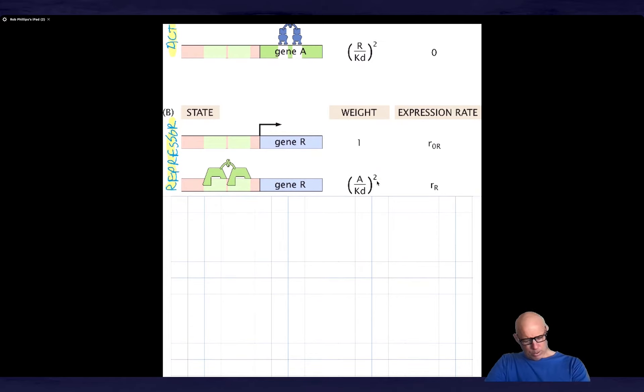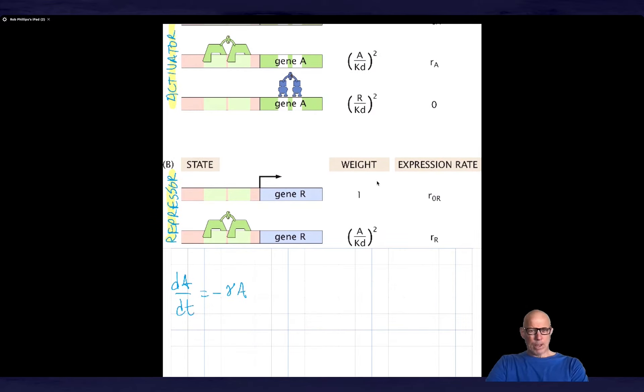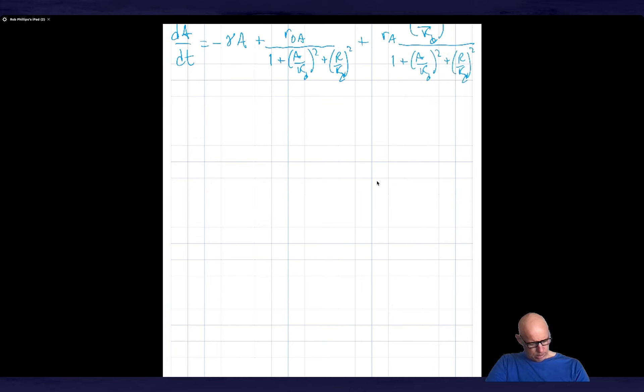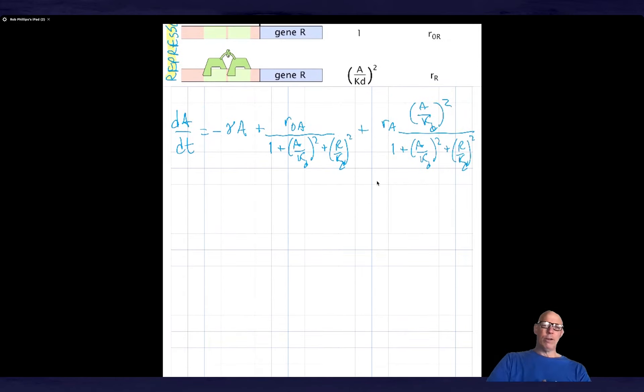So what we're going to do is, as usual, we're going to write down some differential equations of the dynamics. So the first thing I'm observing here is that the activator is degraded at a rate gamma. And then I'm going to note that there's production, and that production comes at rate that I show you here for basal production. And then there's a higher level of production, which is the activated production, which you see here.